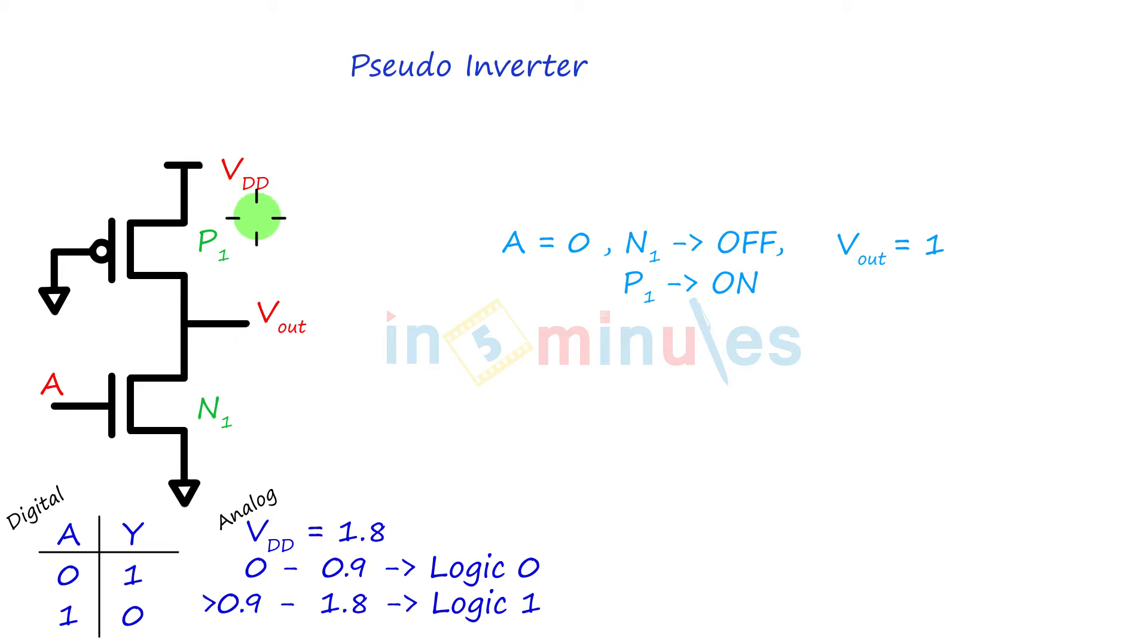Now the case changes when A is 1. N1 is on because an NMOS transistor turns on when logic 1 is applied. But P is also grounded, so P is also on. So what's going to happen is P is trying to pull the output towards VDD, at the same time N is trying to pull the output towards ground. Both of them are trying to pull the output to their respective potentials.